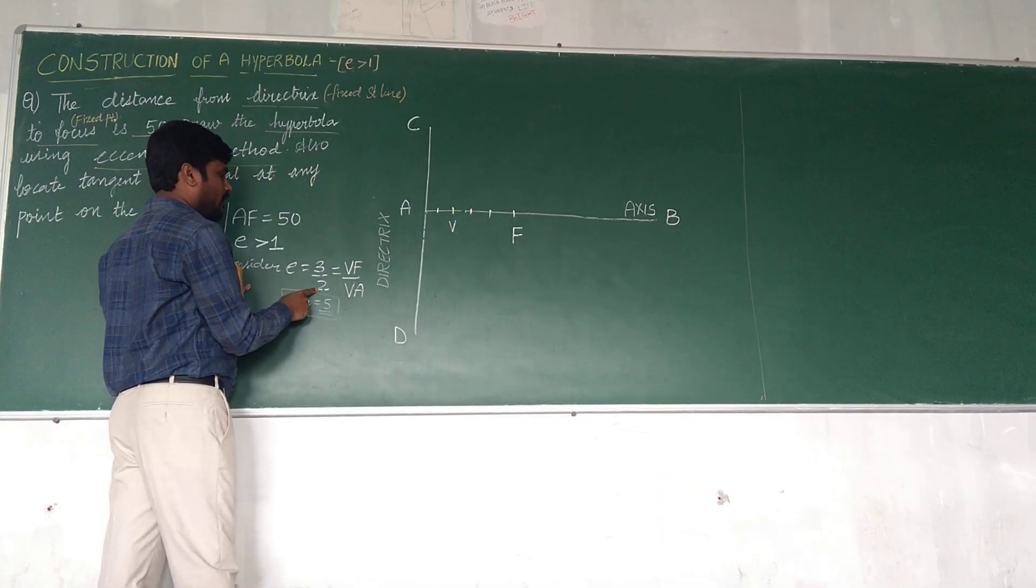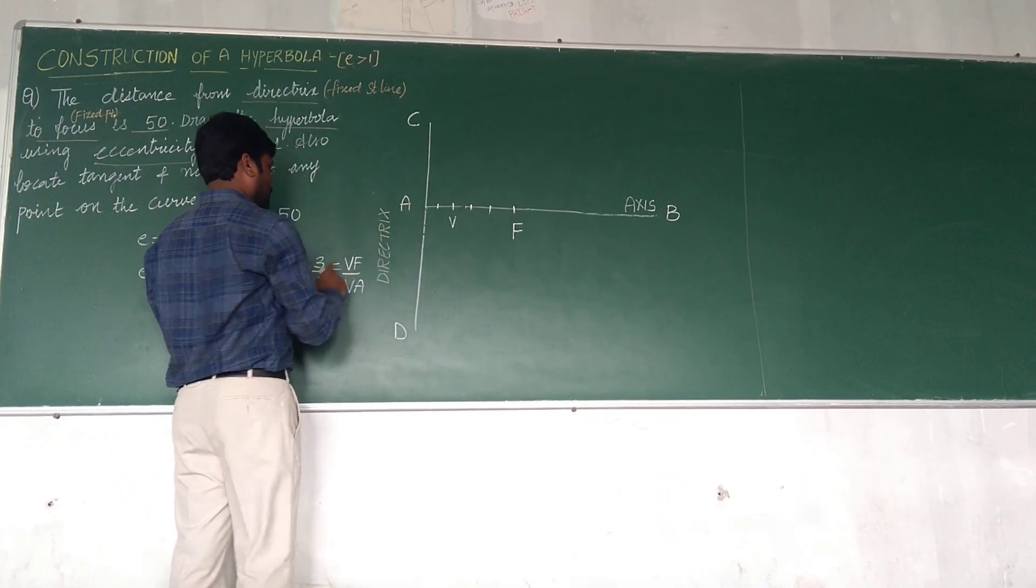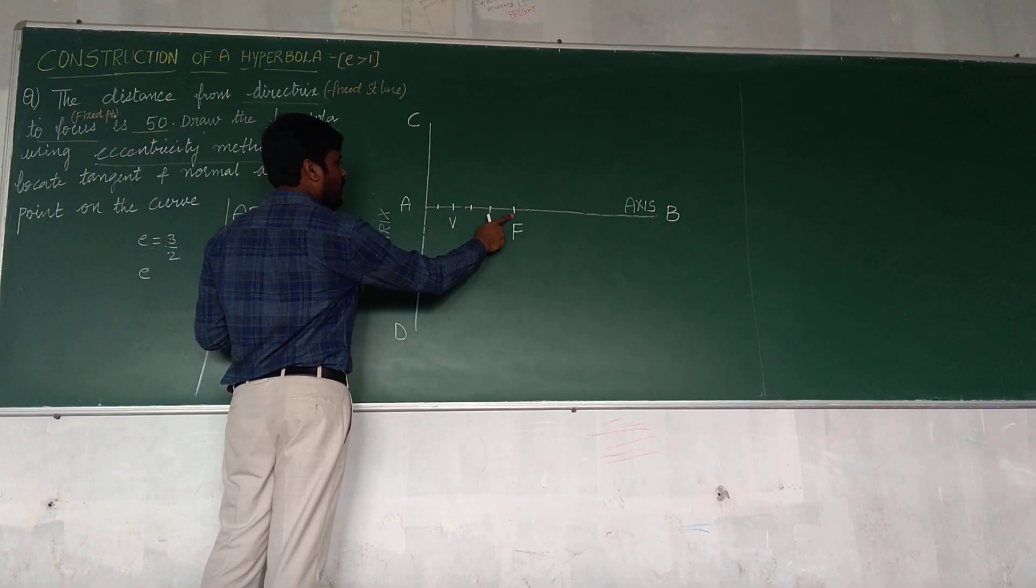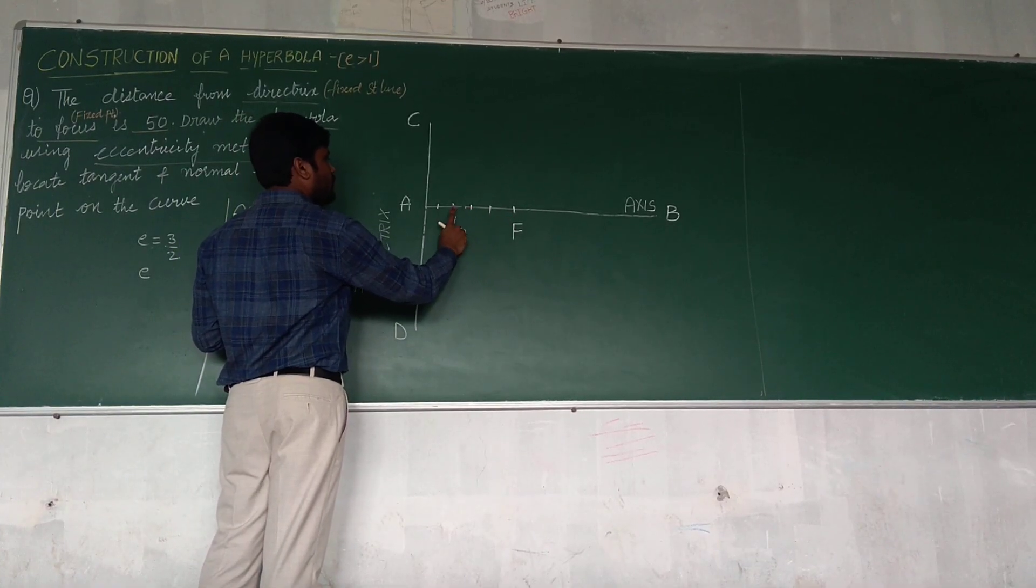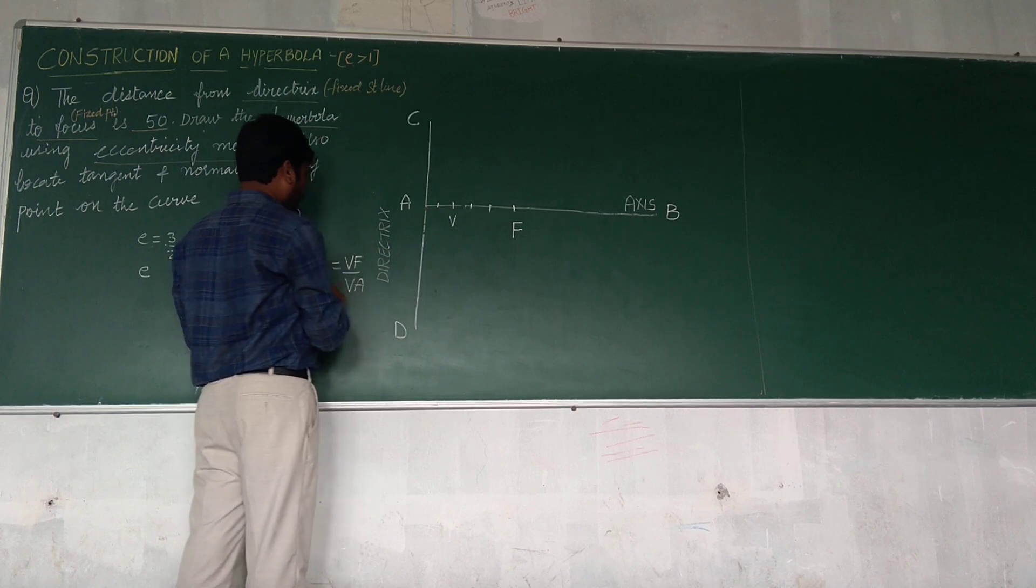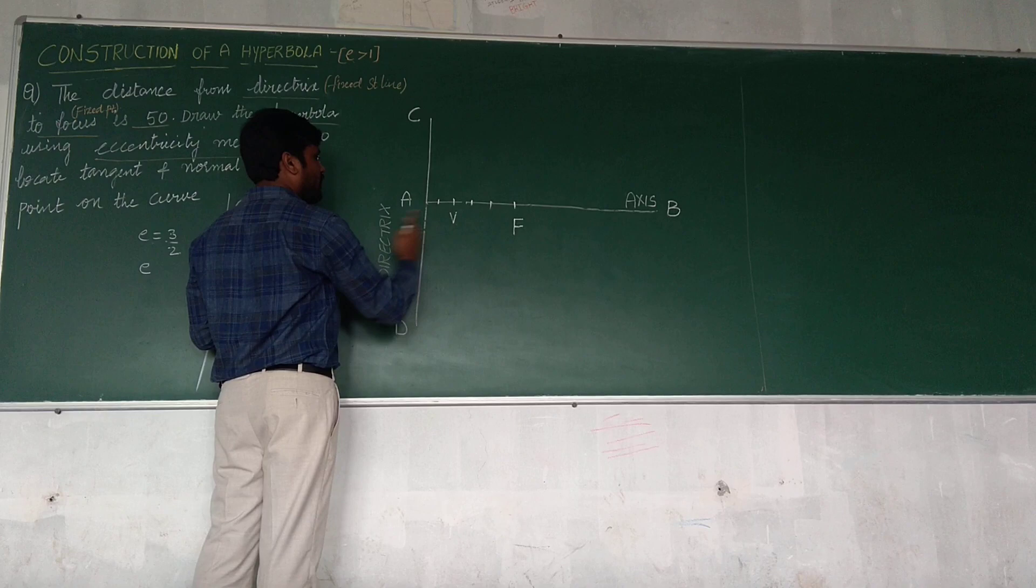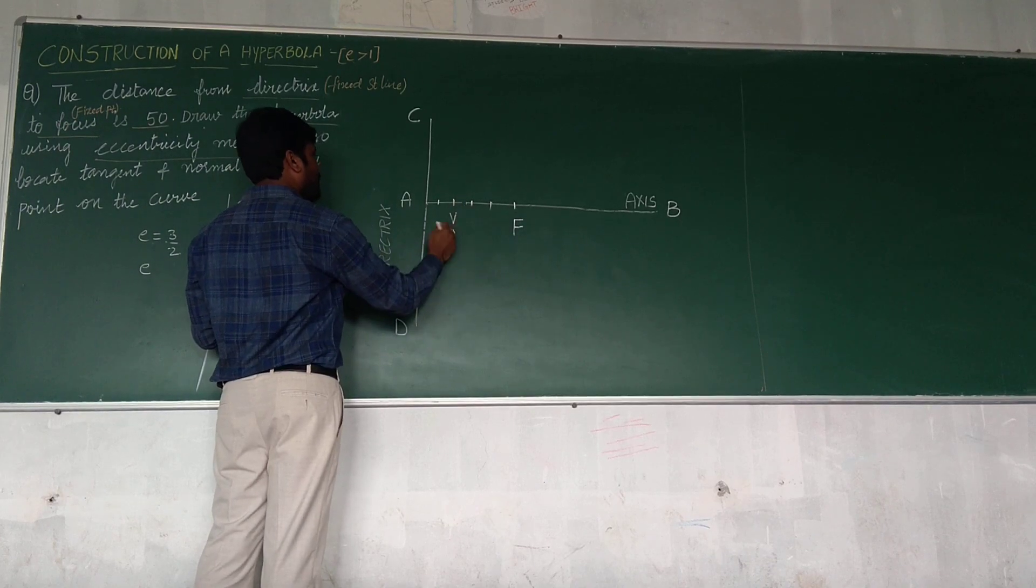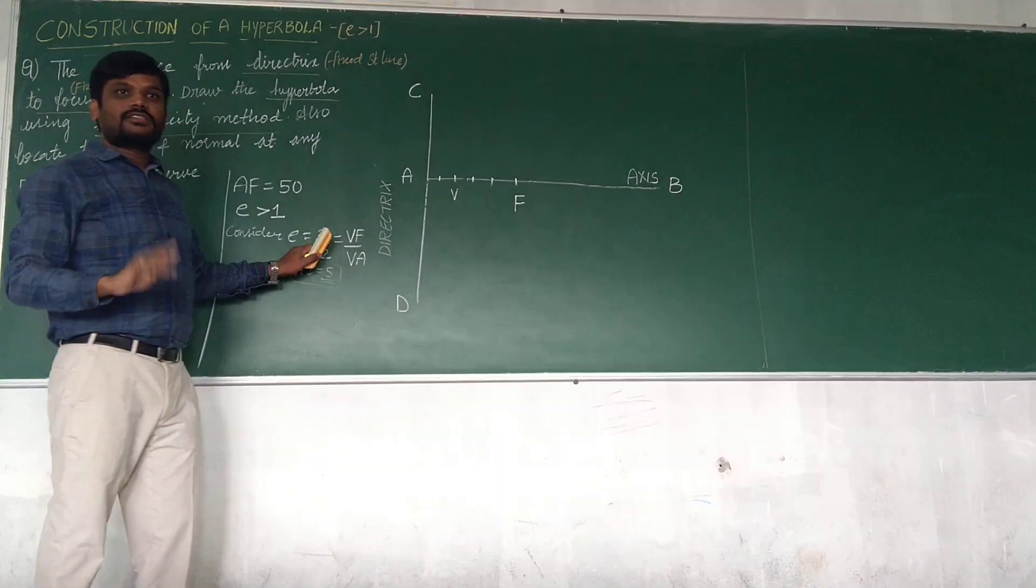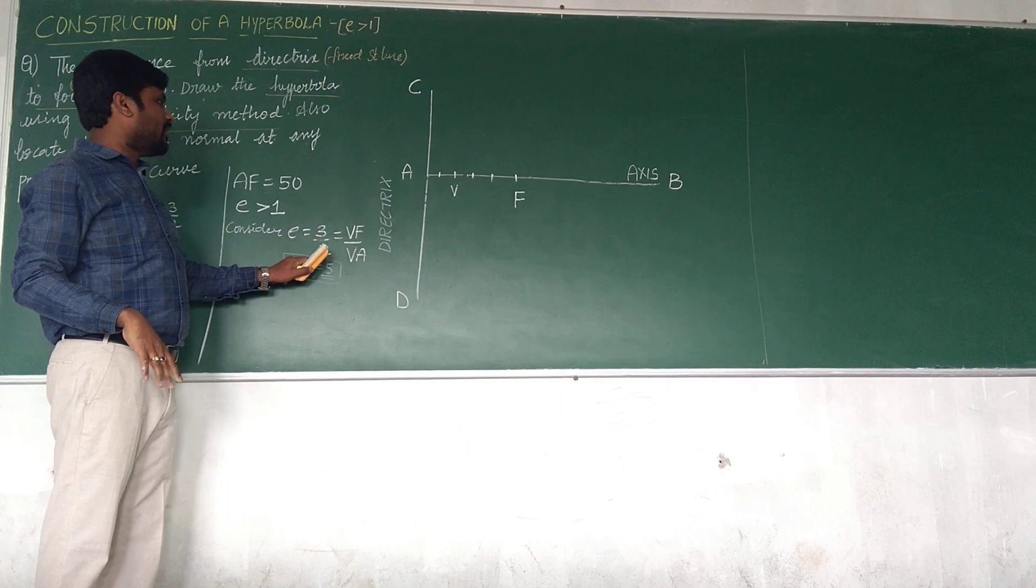Or if you read from the focus, that is 3, so this is 0, 1, 2, 3, so I need to locate third division as 0, 1, 2, 3. So if you read from either this side or this side, the vertex will be at the same position location, that is 3 by 2.